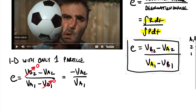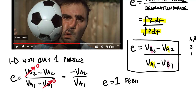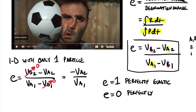If e equals one, we call this perfectly elastic — a perfect bounce with no kinetic energy lost and no velocity lost. If e equals zero, we call this perfectly plastic — like throwing gum at a wall and having it stick. These are the two extreme cases of the coefficient of restitution.